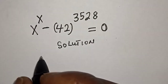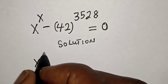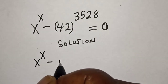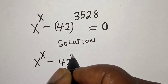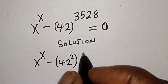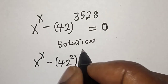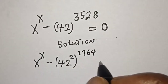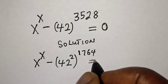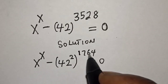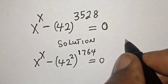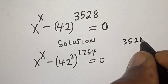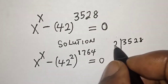Then this is x raised to power x, minus 42 squared, raised to power 1764, is equal to 0. How do we get this 1764? If you have 3528 and you divide by 2.